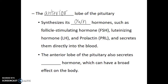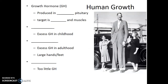Another hormone made by the anterior lobe of the pituitary is human growth hormone, or GH, which will have a broad effect on the body. Growth hormone is produced in the anterior pituitary and its targets are the bones and muscles of the body. Here we'll see a case where overproduction or underproduction of this hormone, at different stages of an individual's life, will end up impacting their overall body size and body plan.